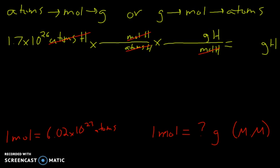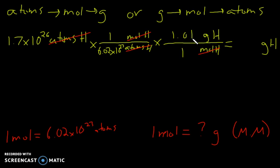Now we've got all our units canceling correctly. For the first conversion factor going from atoms to moles, we know that 1 mole equals 6.02×10²³. For the second conversion factor, we know that 1 mole equals 1.01 grams of hydrogen, which is the molar mass of hydrogen.